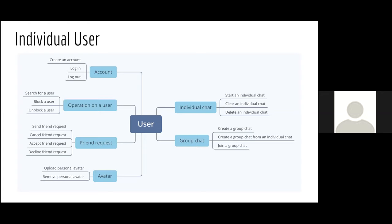For group chats, a user can create one by inviting any number of their friends, or can take an individual chat and invite friends to it — which is just a different way of creating a new group chat. When a user joins a group chat, they should be able to see the message history from before they joined.